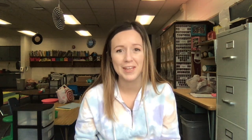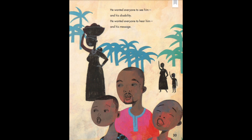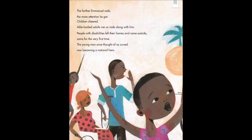Let's read just a little more and see if we can piece it together to figure out the theme. Along the way, Emanuel talked to those with physical challenges and those without, to poor farm workers and wealthy landowners, to religious leaders, government officials, and reporters. He wanted everybody to see him and his disability. He wanted everybody to hear him and his message. The farther he rode, the more attention he got. Children cheered. Able-bodied adults ran or rode along with him. People with disabilities left their homes and came outside, some for the very first time. The young man once thought of as cursed was becoming a national hero.